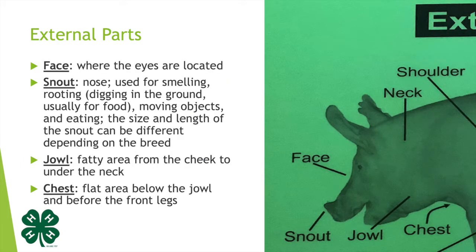Let's go over the external parts of our hog, now that we have some general ideas of what a pig and a hog, a gilt and a sow, and a barrow and all of those terms are. The face is the front part of the pig where the eyes are located. The snout is the nose.